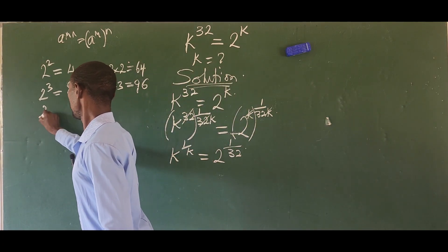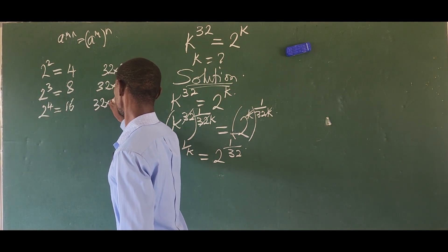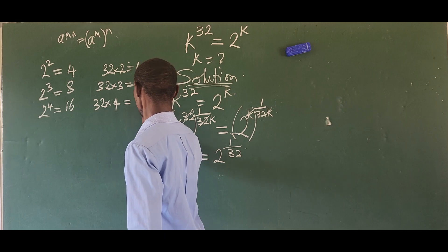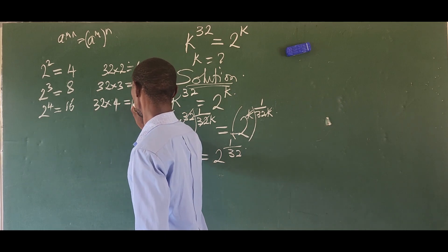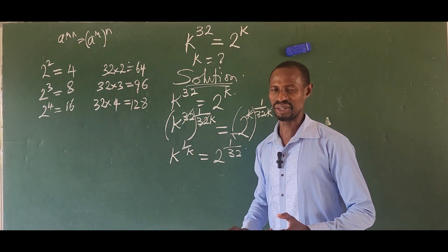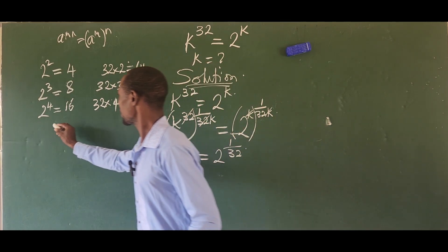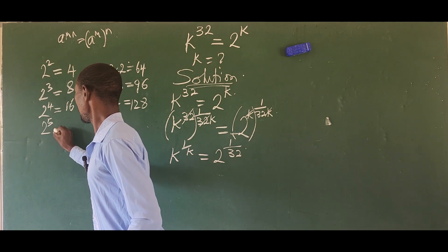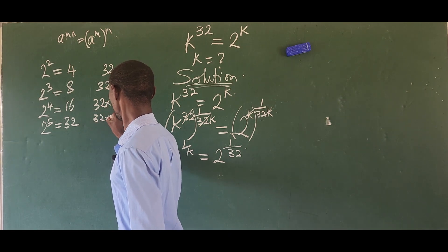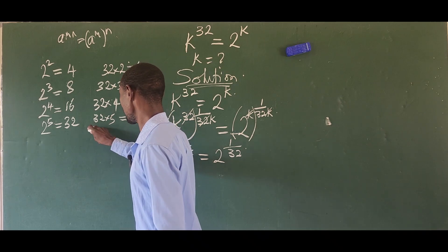So we go again. Try n equals 5: 2 to the power of 5 is 32, and 32 times 5 is 160. Still not the same. Try n equals 6: 2 to the power of 6 is 64, and 32 times 6 is 192. Still not the same. Try n equals 7: 2 to the power of 7 is 128, and 32 times 7 is 224. Still not the same.